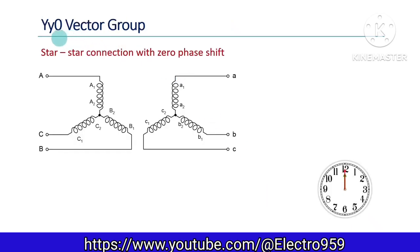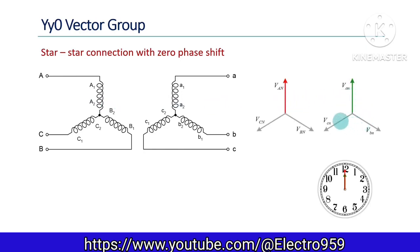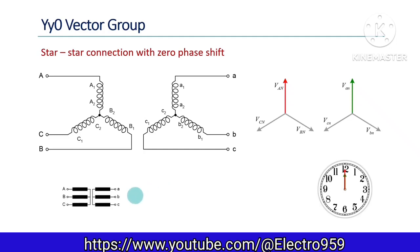The first type we are going to discuss is the YY0 vector group. It has a star-star connection, meaning both primary and secondary windings are star connected. In the phasor diagram, the three voltage phasors are 120 degrees apart. The secondary winding voltages in all three phases are in phase with the corresponding primary voltages. The phasor positions of one phase are represented by clock hand positions, with the red hand representing the primary phasor and the green hand representing the secondary phasor. Here the phase difference is zero, corresponding to the zero o'clock position — that is how this vector group is named YY0.